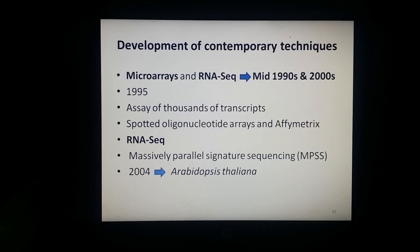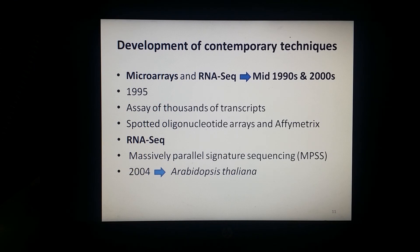There are two dominant contemporary techniques: microarrays, developed in the mid-1990s, and RNA sequencing, developed in the mid-2000s. Microarrays measure the abundances of a defined set of transcripts through hybridization to an array of complementary probes. This method was first published in 1995. Microarray technology allows the assay of thousands of transcripts simultaneously at greatly reduced cost per gene, making it labor-saving. Until 2000, oligonucleotide arrays and Affymetrix high-density arrays were the method of choice for transcriptional profiling.